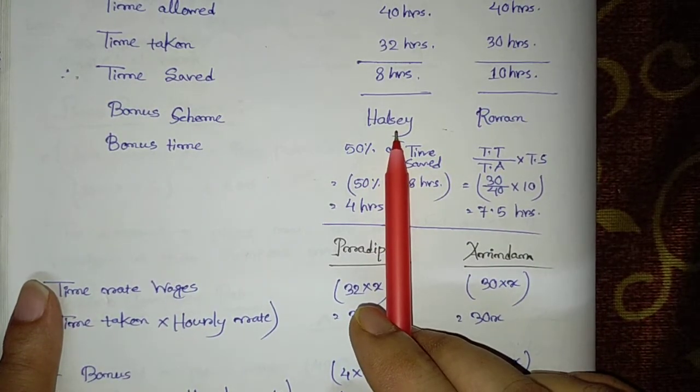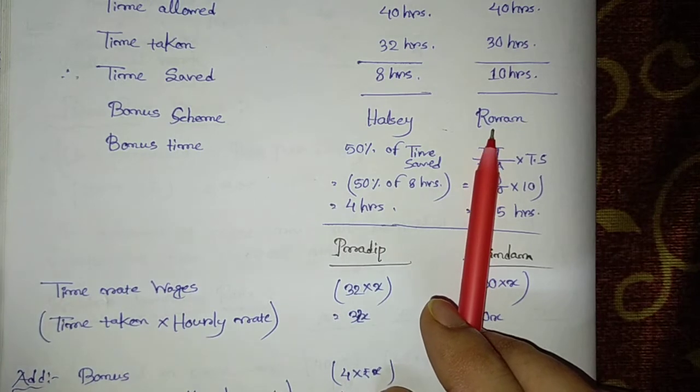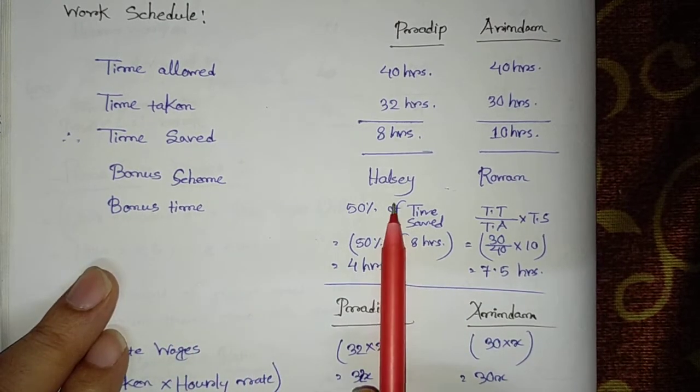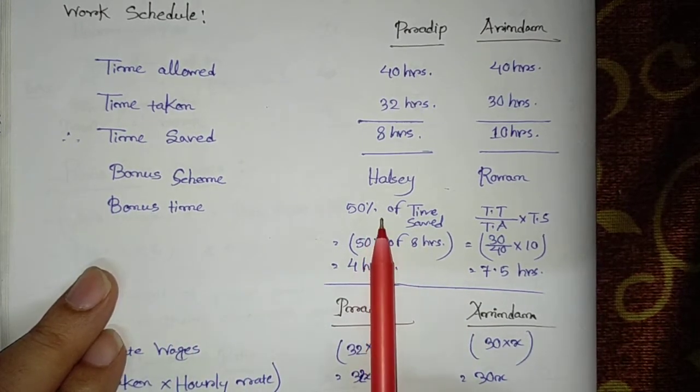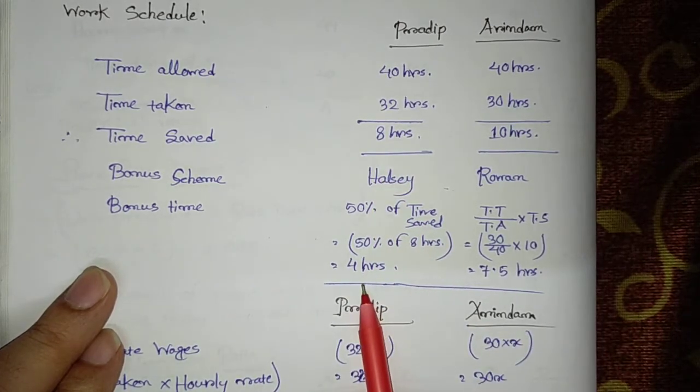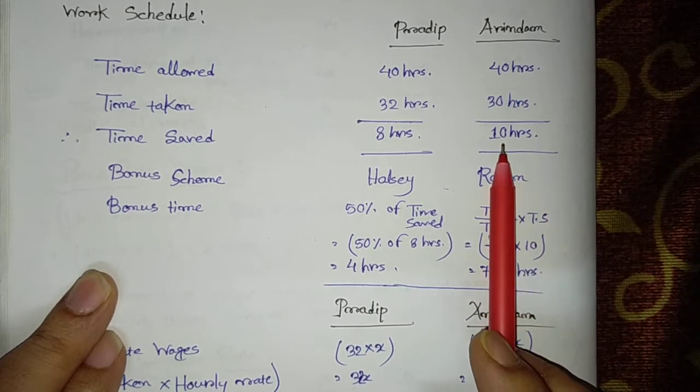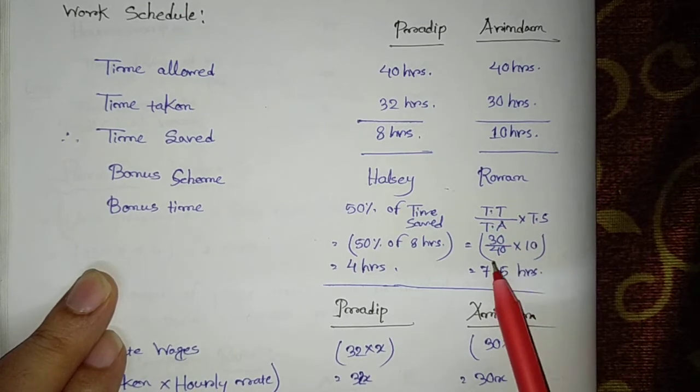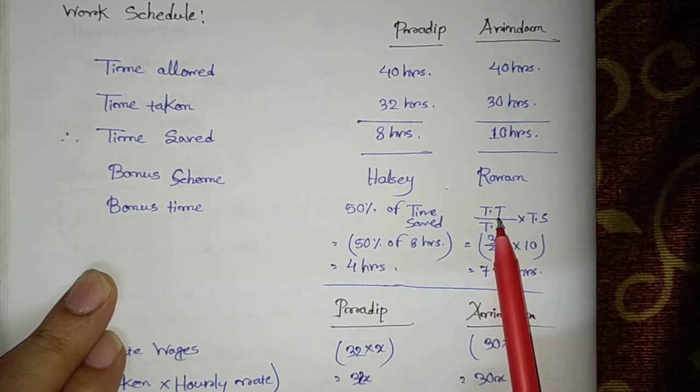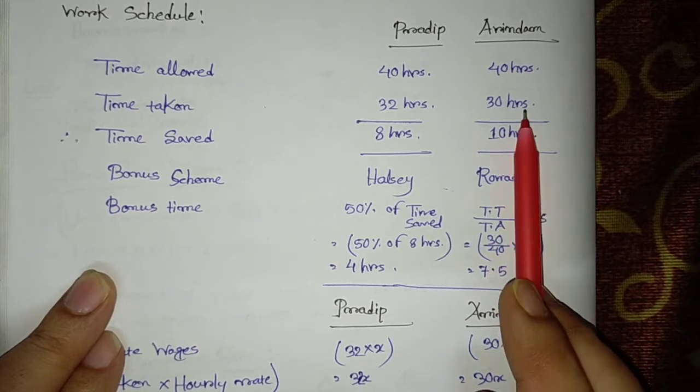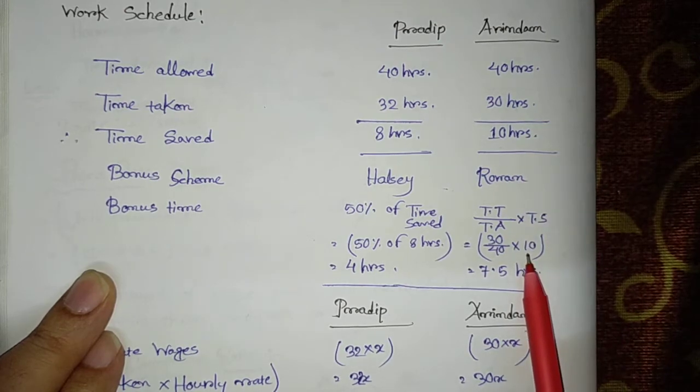Bonus scheme: Pradeep is getting bonus under Halsey plan and Aurindam is getting bonus as per Rowan plan. Halsey plan's bonus time formula is 50% of time saved. Here time saved is 8 hours, so 50% of 8 hours will be 4 hours. In case of Aurindam, who is getting bonus under Rowan plan, the formula of bonus time will be time taken by time allowed into time saved. Therefore, time taken was 30 hours, time allowed 40 hours, and time saved 10 hours. It will be 7.5 hours.